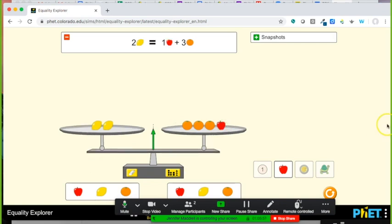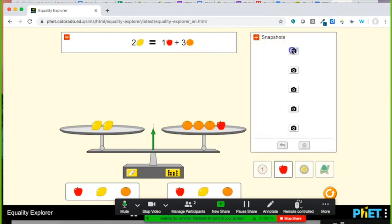Awesome. So we have an equality here where two lemons is the same in terms of weight as one apple and three oranges. Now with PhET, and I have control now, I'm going to take a snapshot of that so we have the memory that this is an equality within this tool.